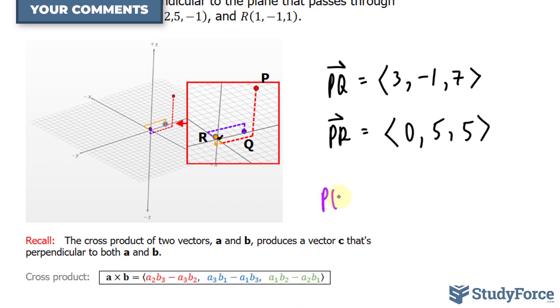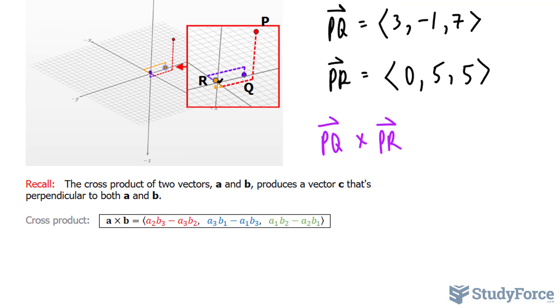We have PQ times the vector that connects point P to R. And of course, you can set this up like a determinant, a 3 by 3 determinant, as we did in one of our previous introductory videos to cross product.